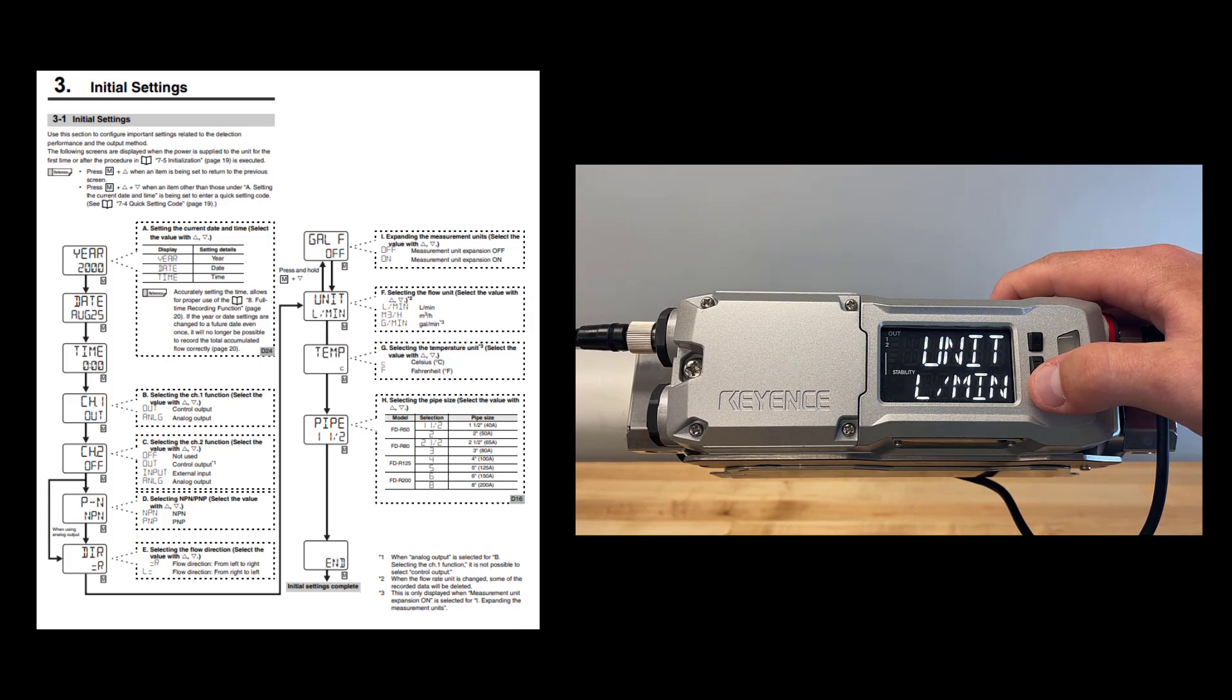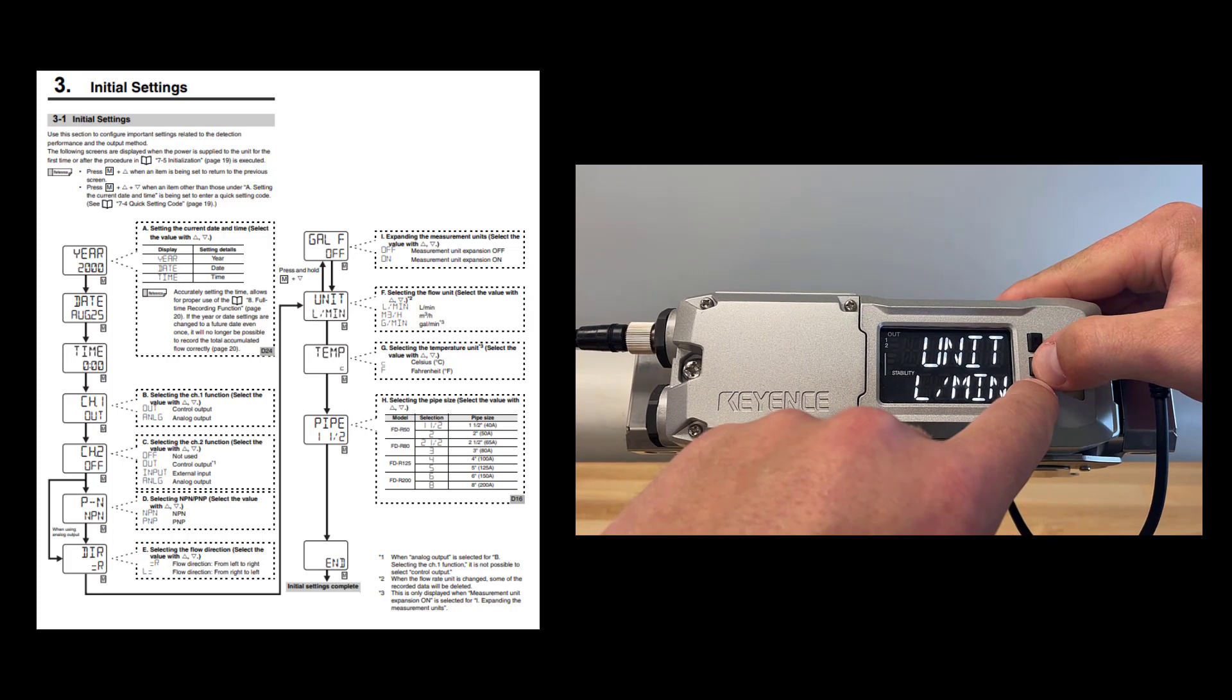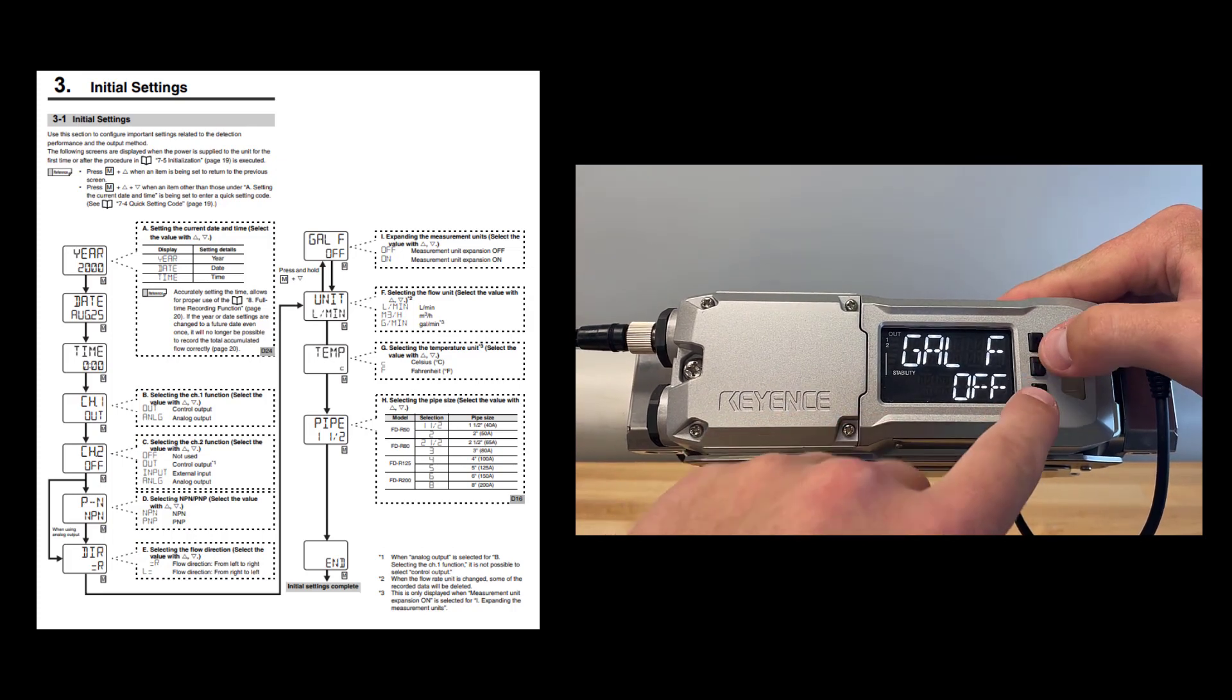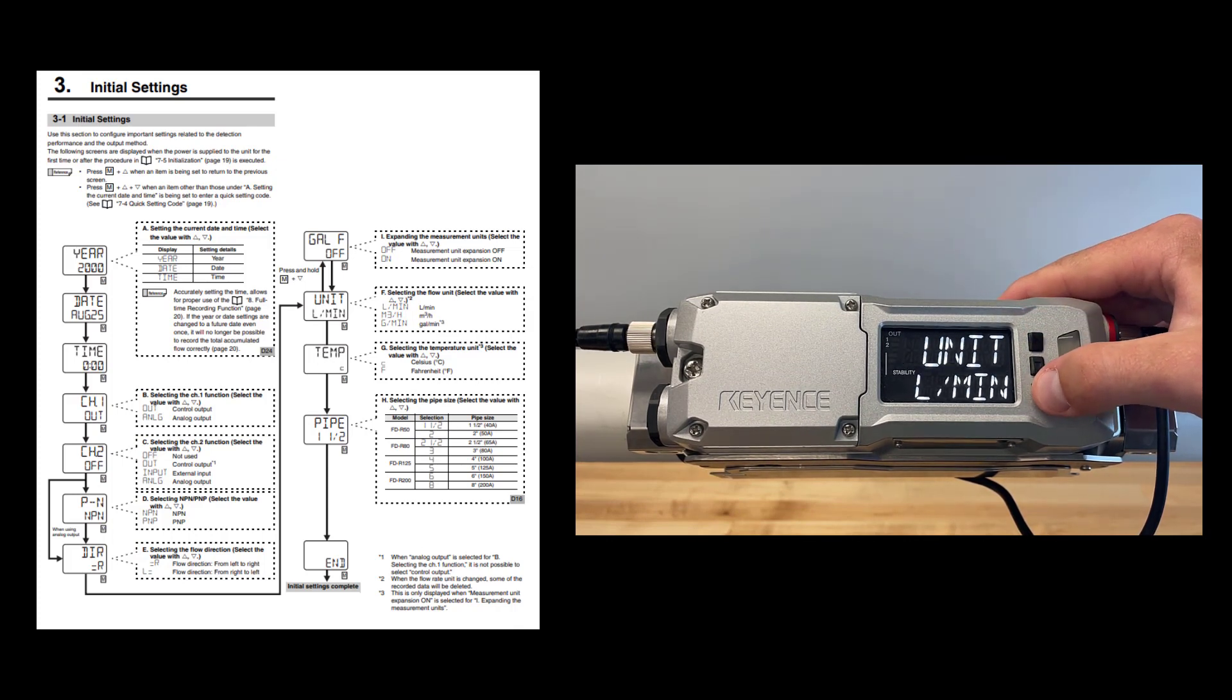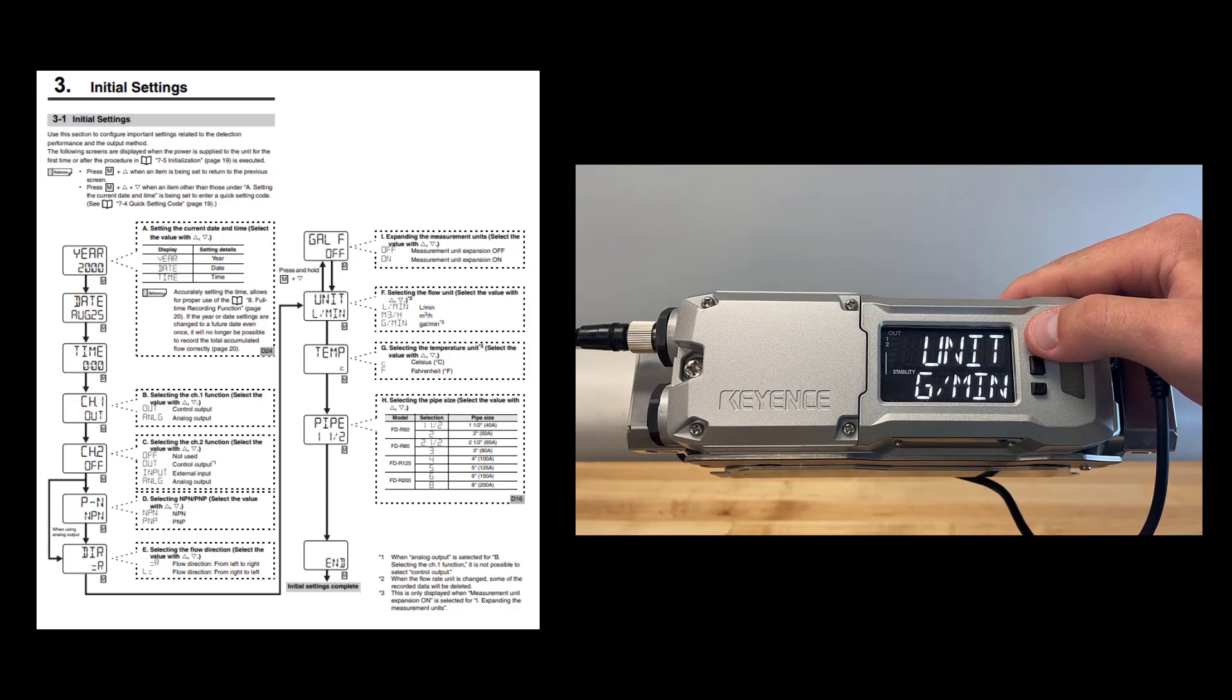Next, set the units at which you need the flow meter to read in. If gallons is preferred, hold the mode and down arrow key, and turn on gallons for a unit. Now you can select liters a minute, gallons a minute, or meters cubed per hour.